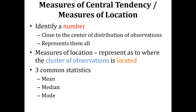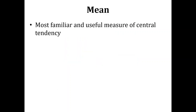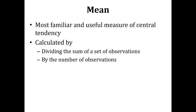There are three common statistics by which we can measure central tendency or location, and these are mean, median, and mode. Mean is the most familiar and useful measure of central tendency and the most widely used. It is calculated by dividing the sum of a set of observations by the number of observations.